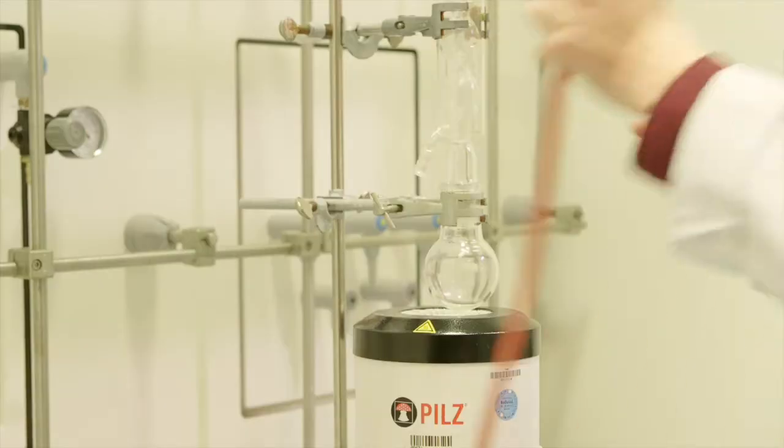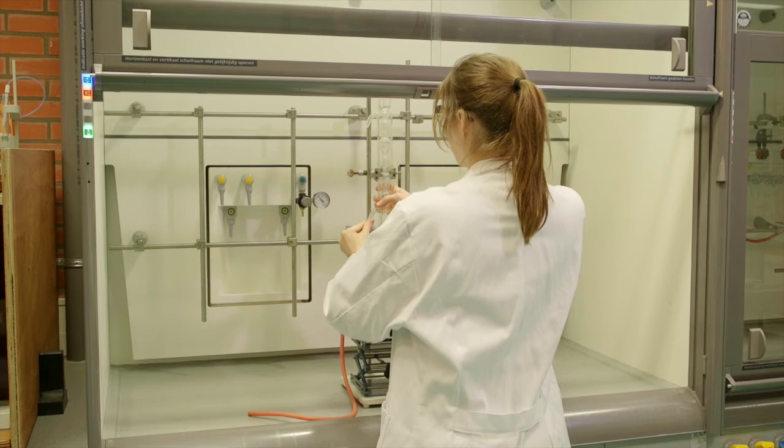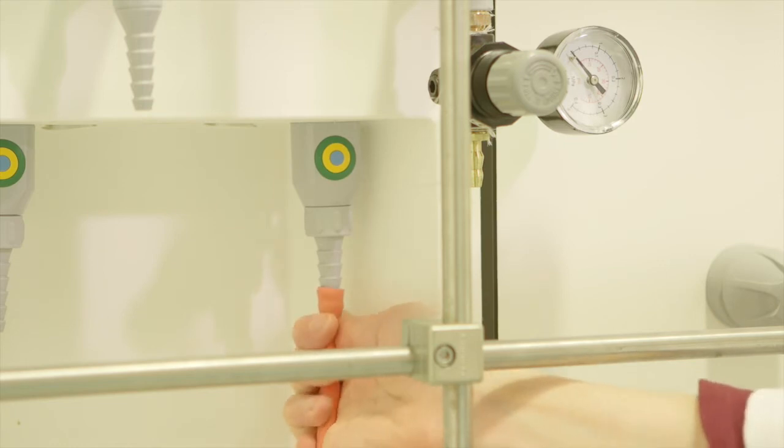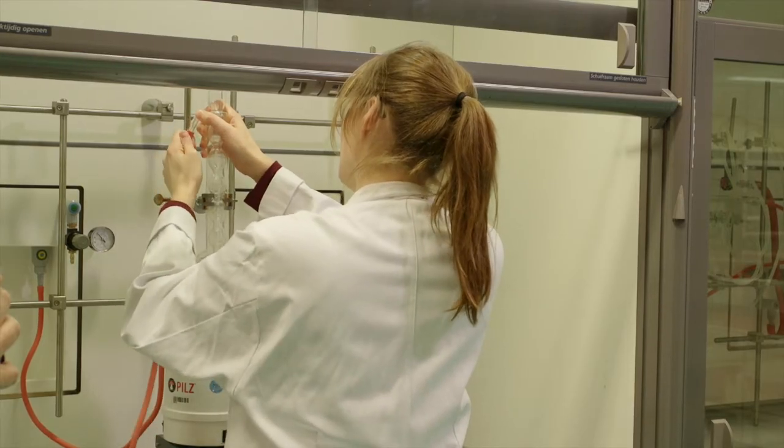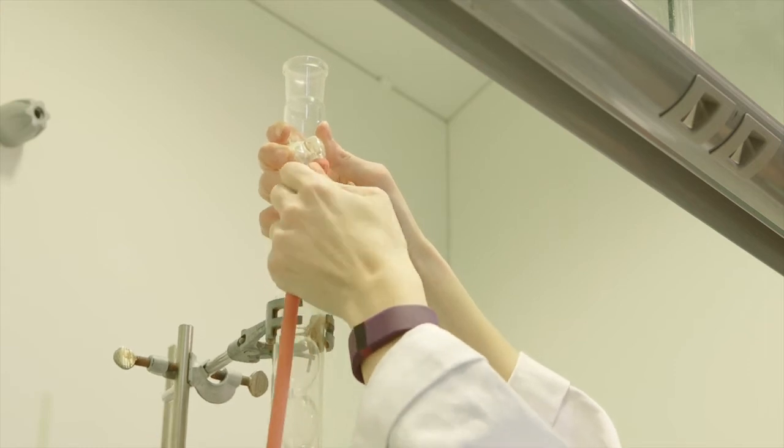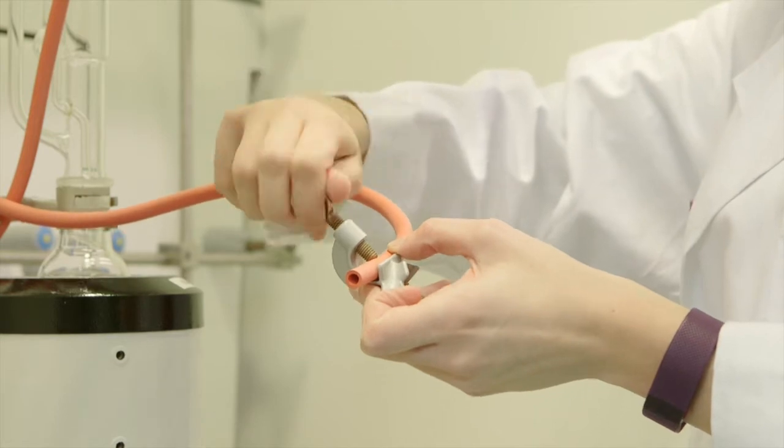Attach a tube to the lower port of the condenser. This is where water will enter. Attach the other end of this tube to the tap. The water will flow up when the tap is turned on. To drain the water, the second tube is attached to the upper port of the condenser and the other end placed in the sink drain. If the tube doesn't stay in the drain, it can be weighed down by a part of the clamp.